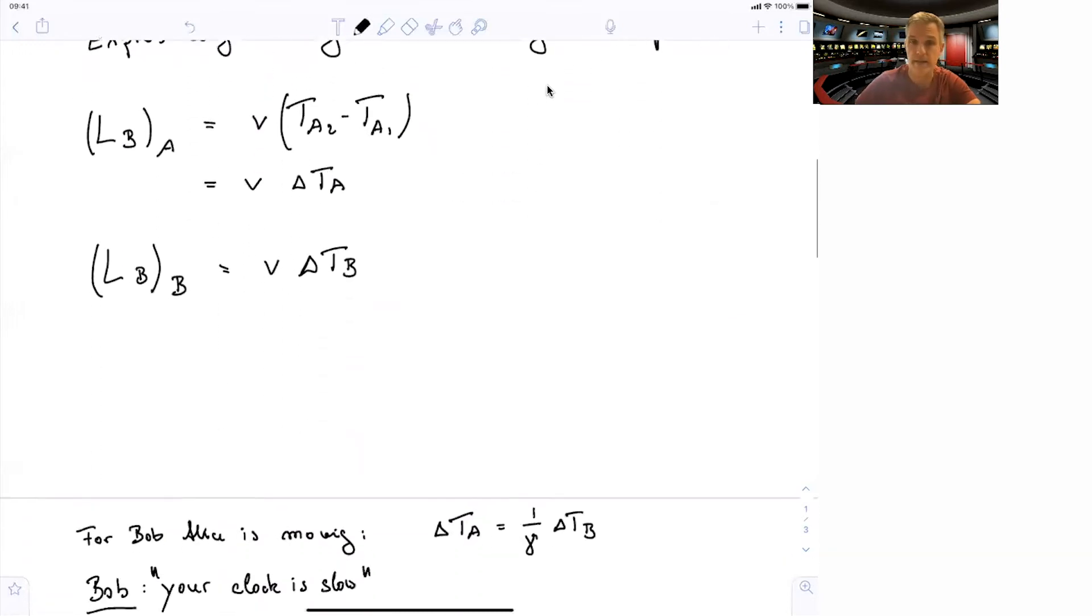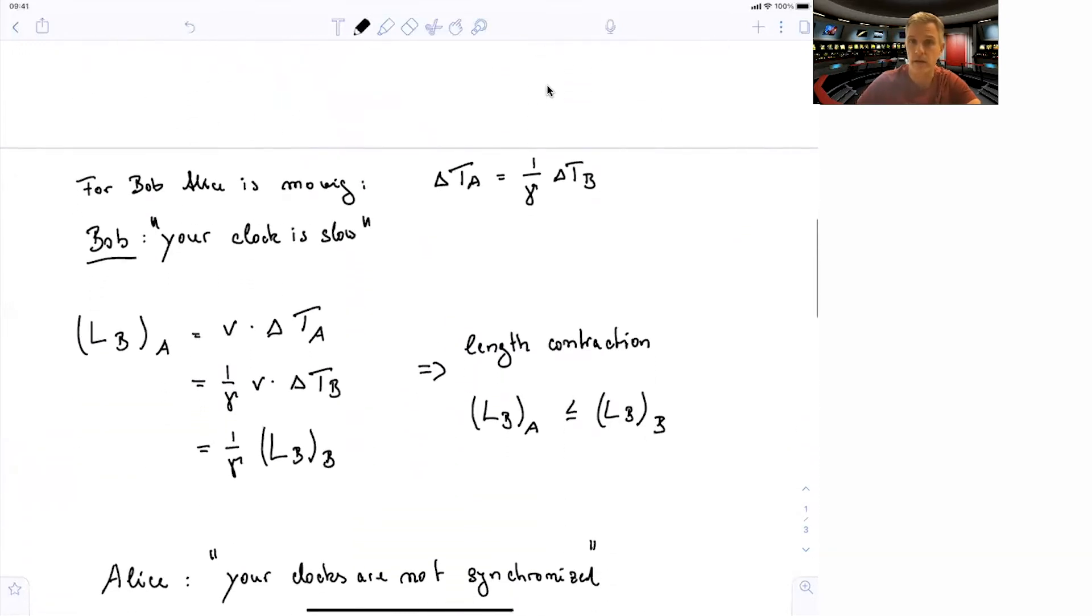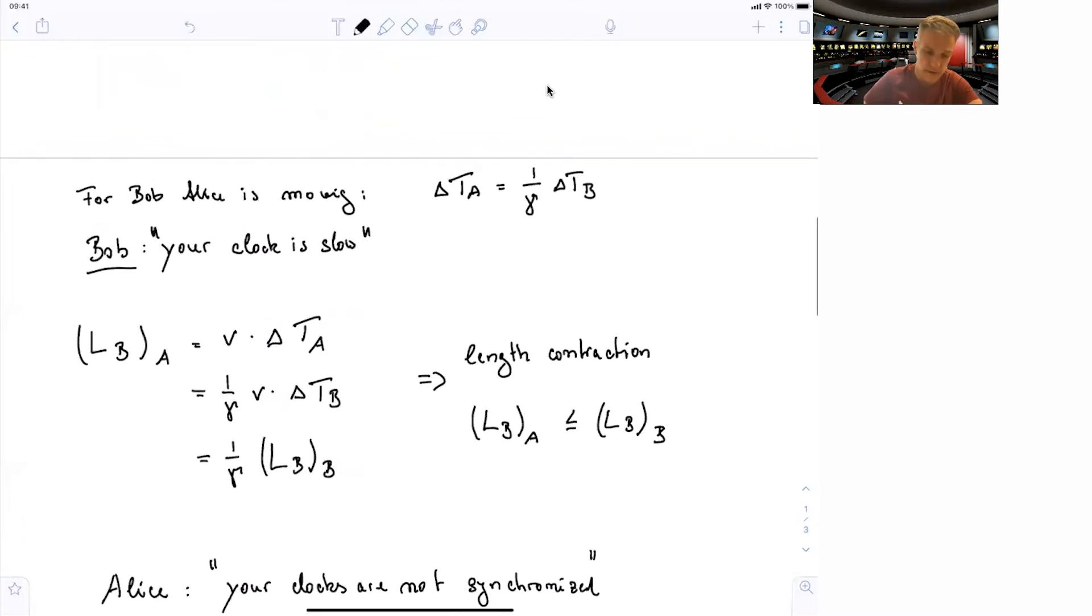For Bob, Alice now is moving. So the time difference in Alice's clock will be smaller by 1 over gamma compared to what Bob sees in his own clocks. So Bob says, your clock is slow. So we can use this. We can then calculate the length of the spacecraft as Alice sees it equal to v times delta TA.